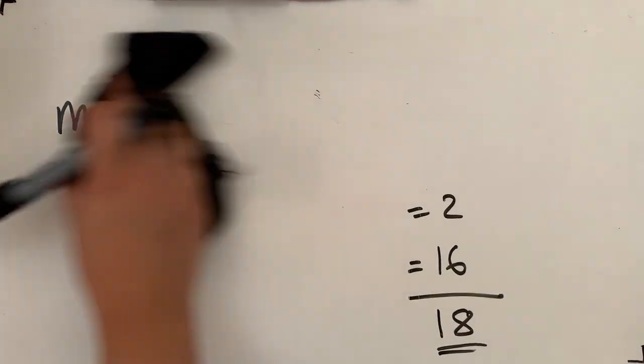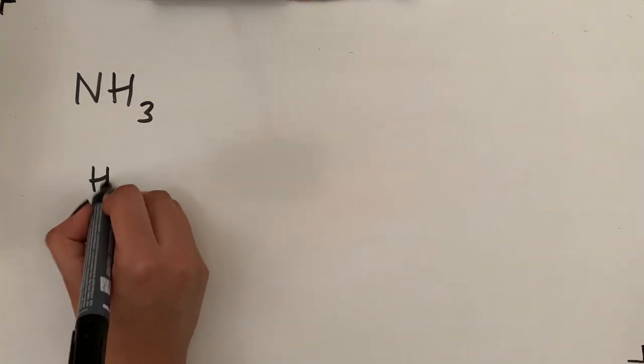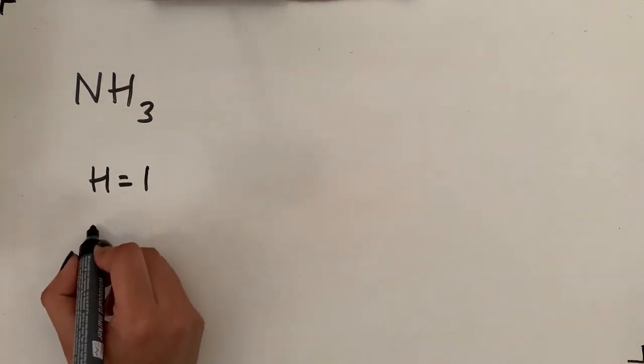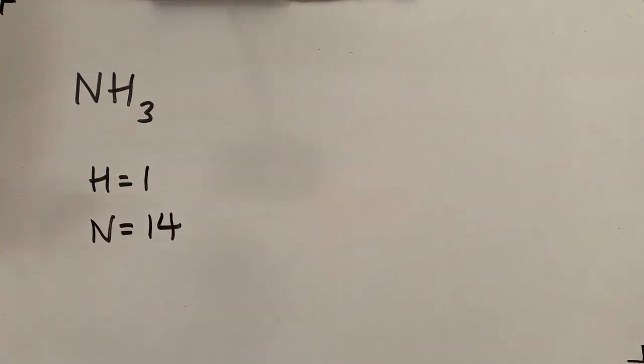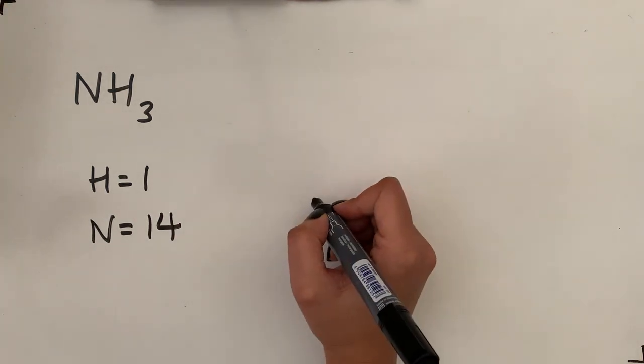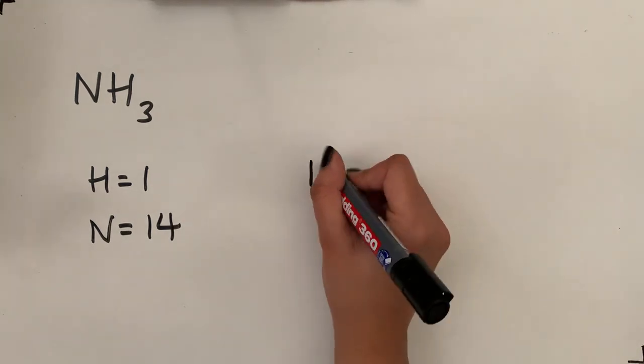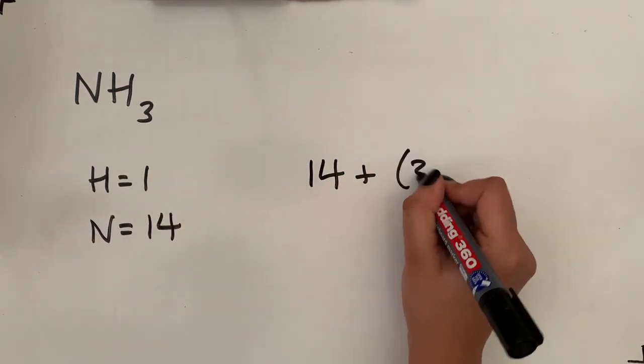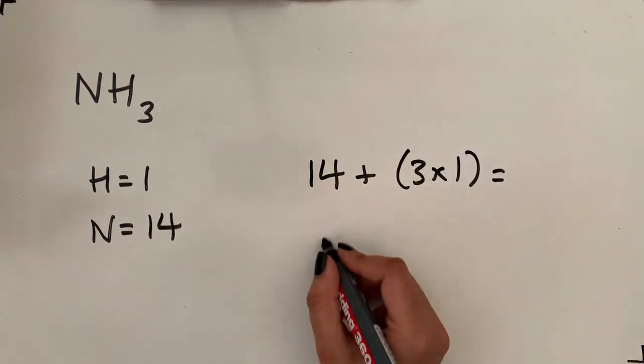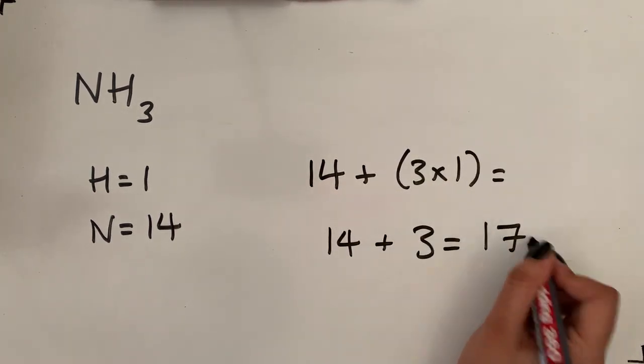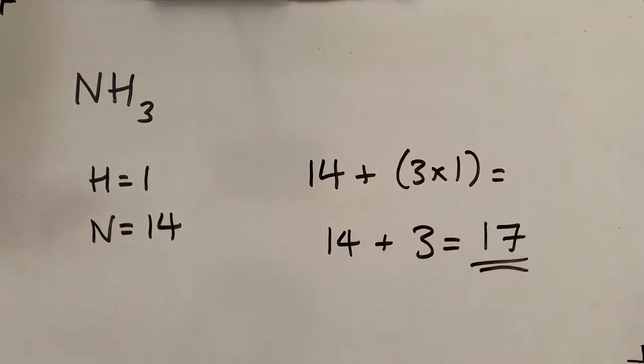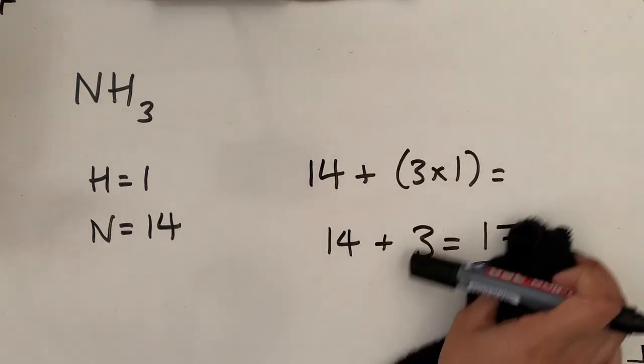I'll do another example of that. Calculating the molar mass or the relative formula mass of, let's go for question number 3, so that's ammonia, NH3. You've got hydrogen which has a mass of 1, and nitrogen which has a mass of 14. Now all you do is nitrogen is just one of those so it's 14, plus three lots of hydrogen so that's 3 times 1, so it's 14 plus 3 which is 17. So that's the relative formula mass, the molar mass of ammonia.